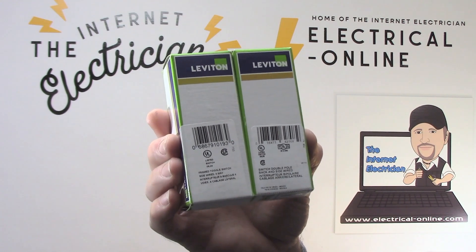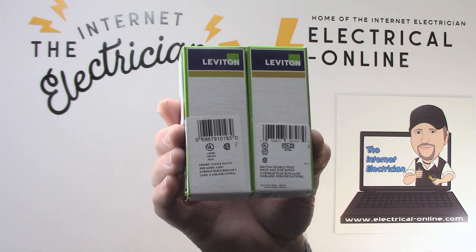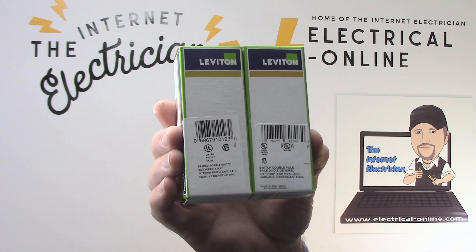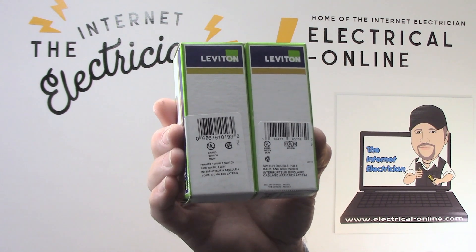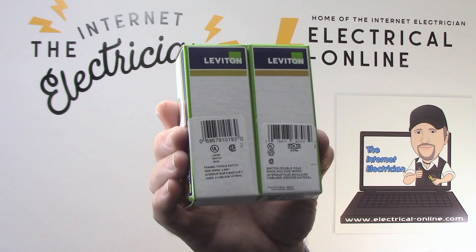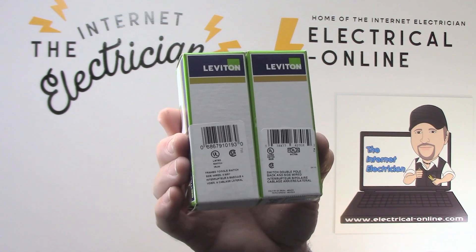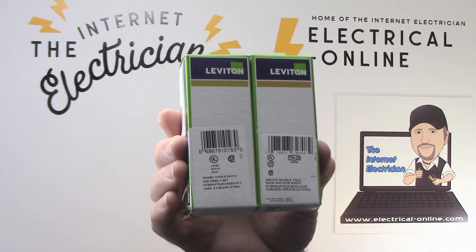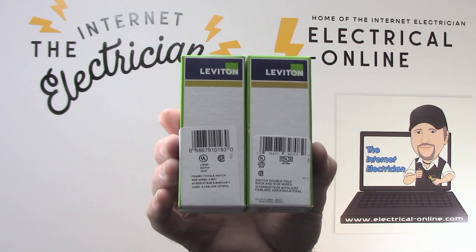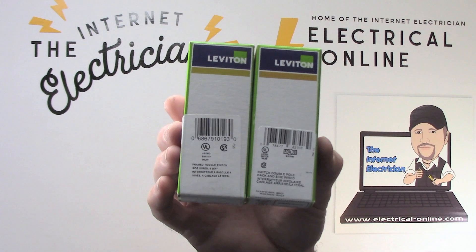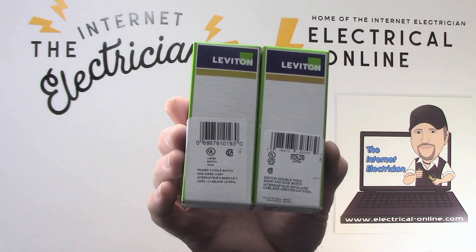But you look and see. One says a switch double pull back and side wired. And the other one says a framed switch side wired 4-way. So also you can have somebody that opened the box and mixed them up, or threw one box into the other shelf location. So be very very careful. Let's have a look at the back side of these to see the difference.